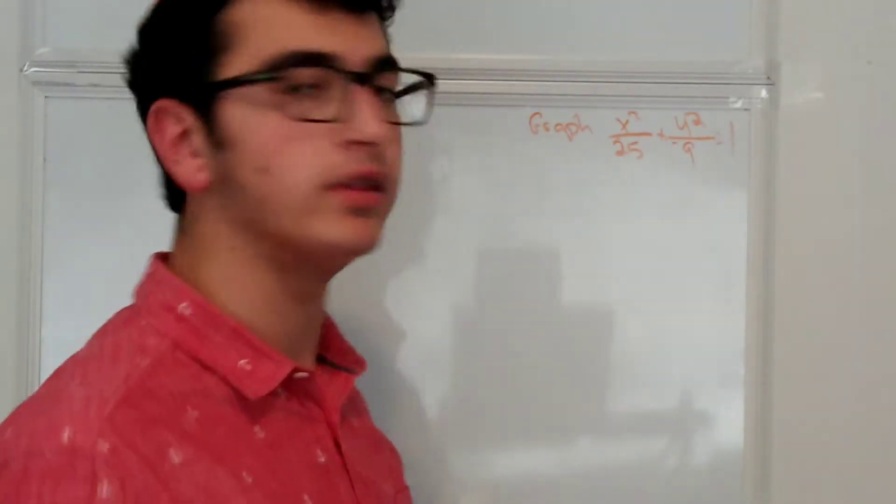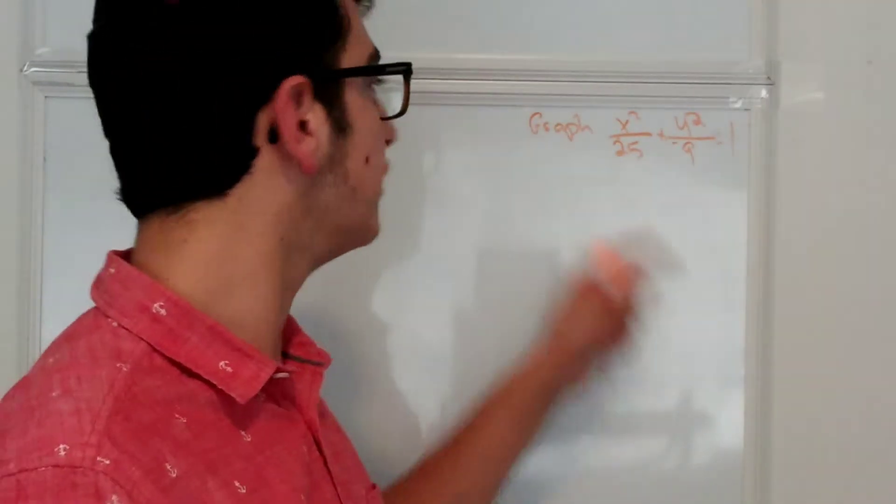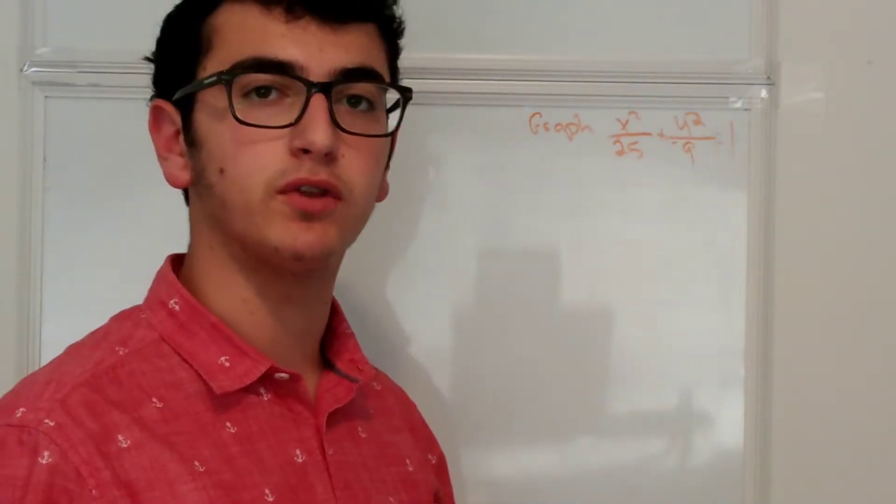So for our first problem, we're going to graph x squared over 25 plus y squared over 9 is equal to 1.